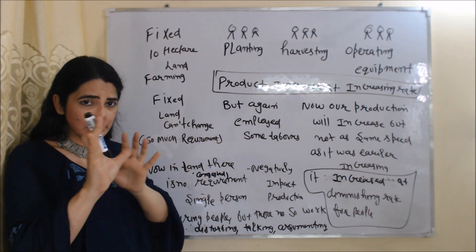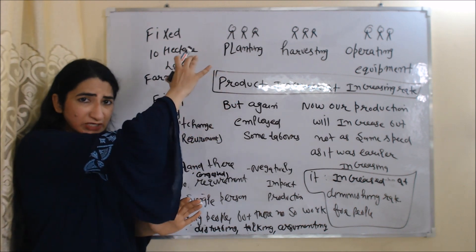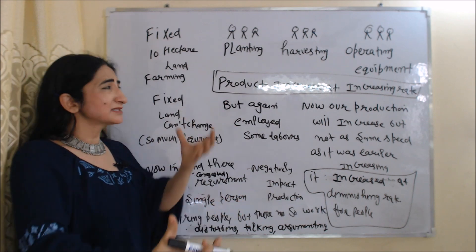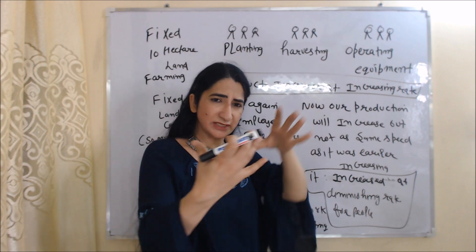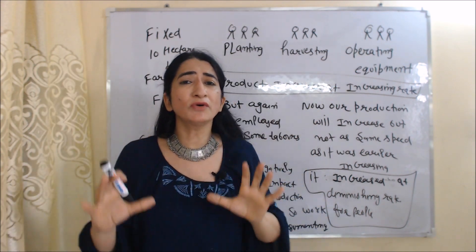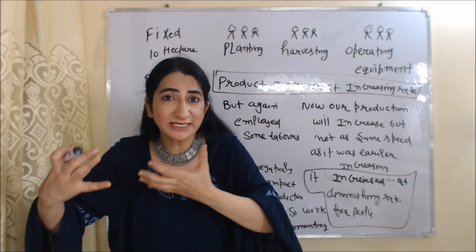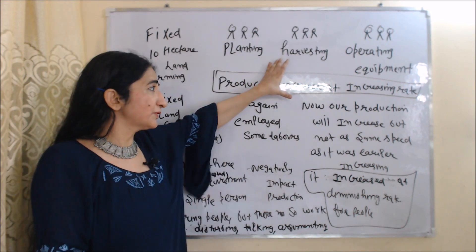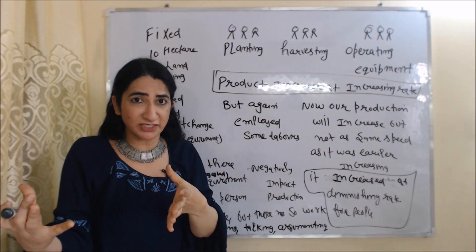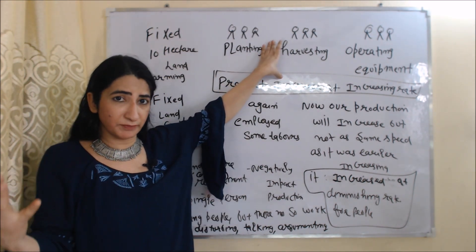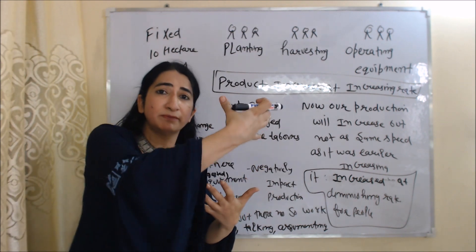Since our land is fixed, there is not as much requirement for labor as before, but we again employ more labor — increasing workers in planting, harvesting, and operating equipment. As a result, production still increases, but the speed of increase falls. Our production is now increasing at a diminishing rate, because earlier there was more requirement for people, but now there is not so much requirement.